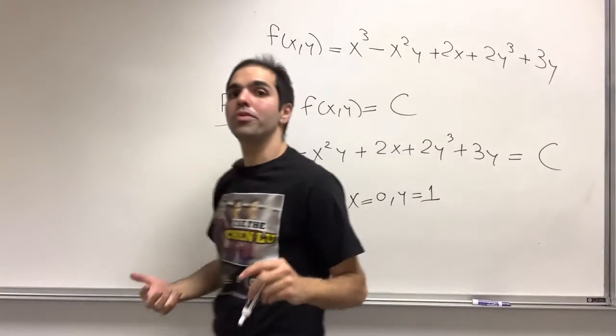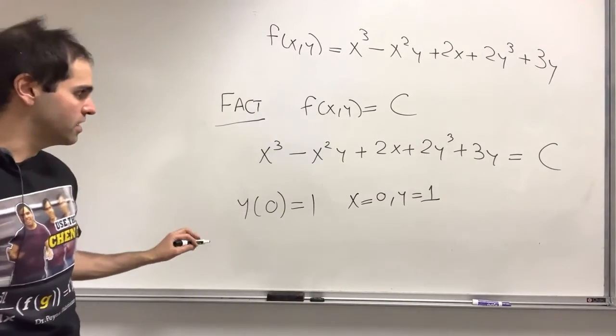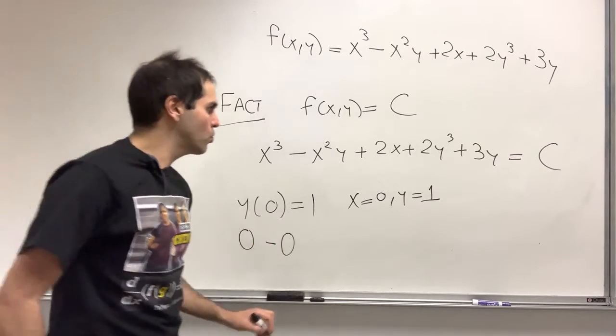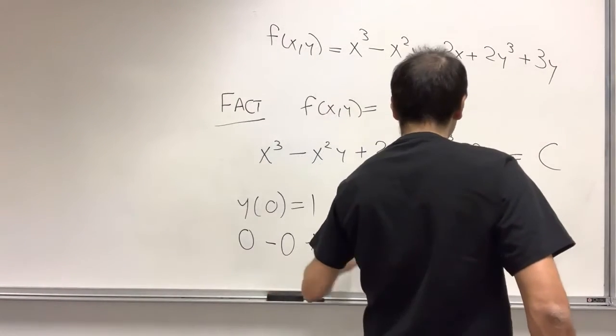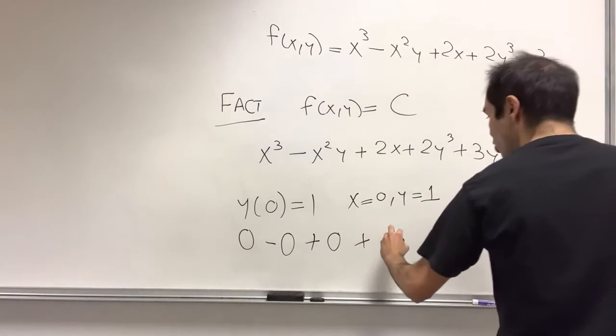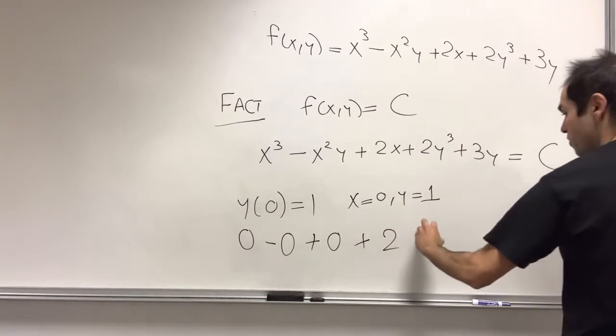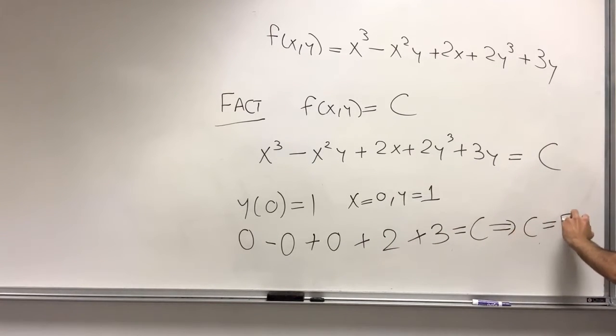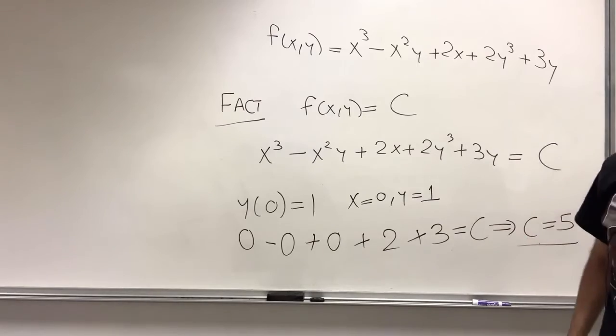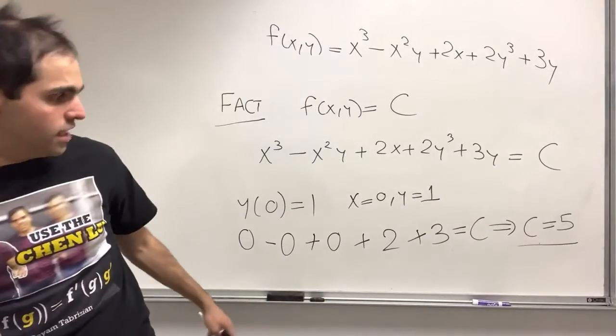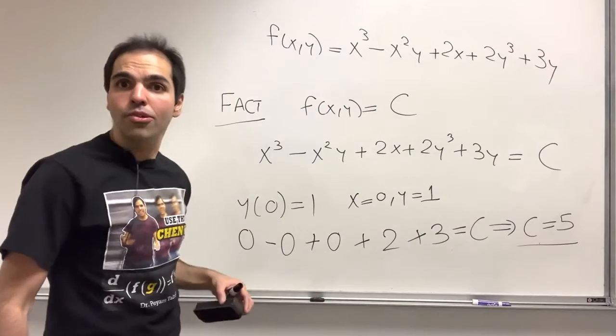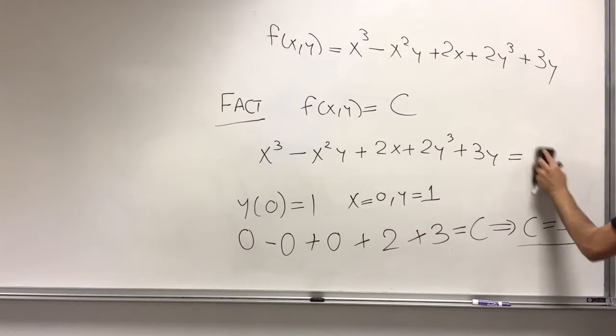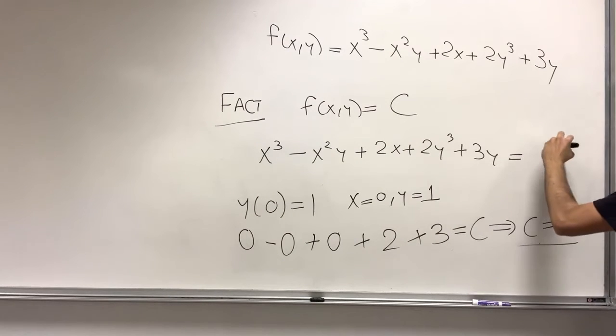So all you do, you plug in x equals 0 and y equals 1 in this equation. So then you get 0 cubed minus 0 squared times 1 plus 2 times 0 plus 2 times 1 cubed, so 2 plus 3 equals c. And then this just implies that your constant is 5. And therefore, what is the solution to our ODE? It's simply x cubed minus x squared y plus 2x plus 2y cubed plus 3y equals 5.